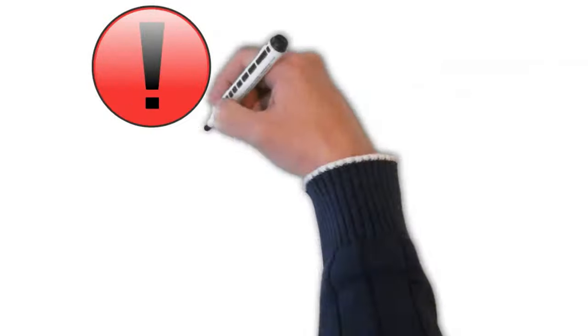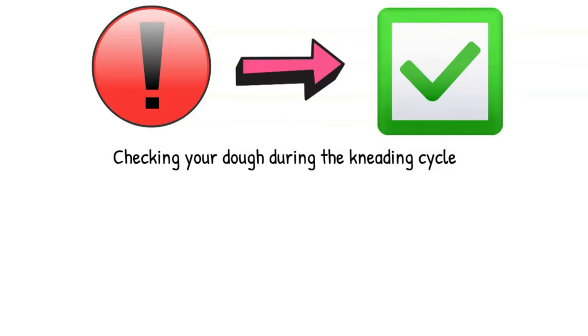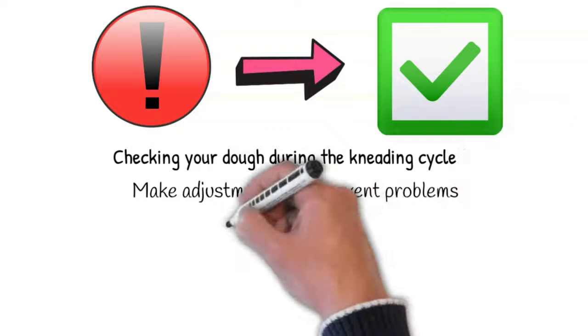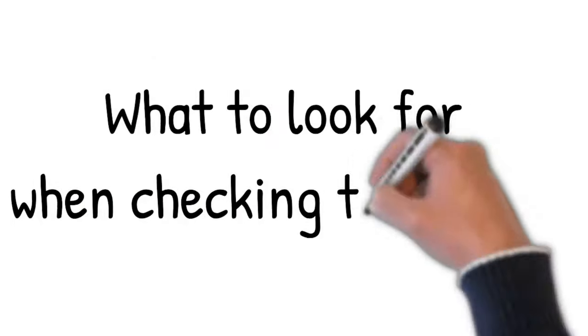Also, many of the problems that you'll encounter can be fixed just by checking your dough during the kneading cycle. This gives you the opportunity to make adjustments and prevent problems before they happen. So, what to look for when checking the dough?